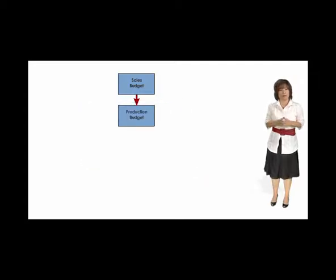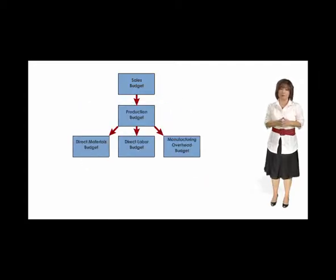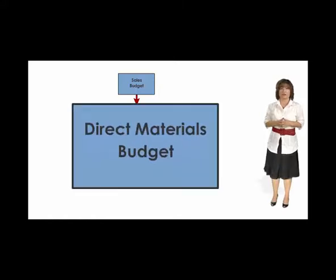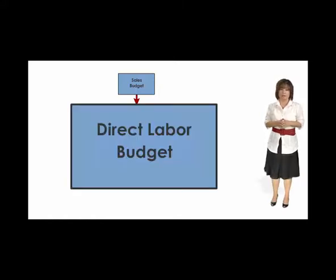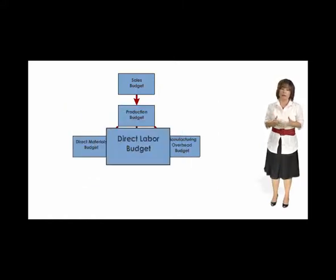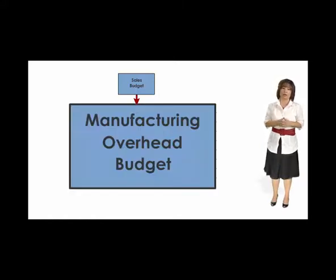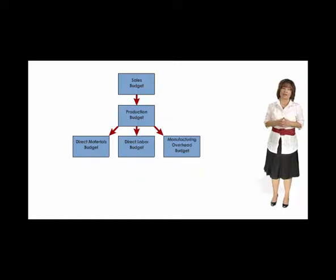Once we have production levels, we can prepare the following three budgets: direct materials, direct labor, and manufacturing overhead. These budgets will indicate both the quantities and the cost of each of these items.